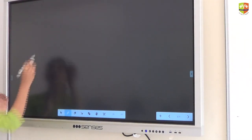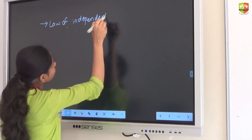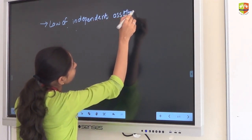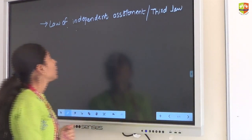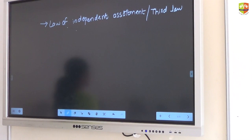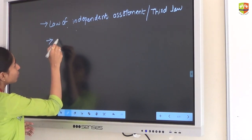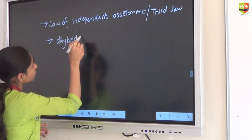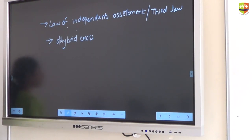The next law is the law of independent assortment — Mendel's third law. The law of independent assortment cannot be explained using monohybrid cross. It can be explained only with the help of dihybrid cross. It should have two different characters. Whereas the first law and second law can be explained both by using monohybrid cross and dihybrid cross.